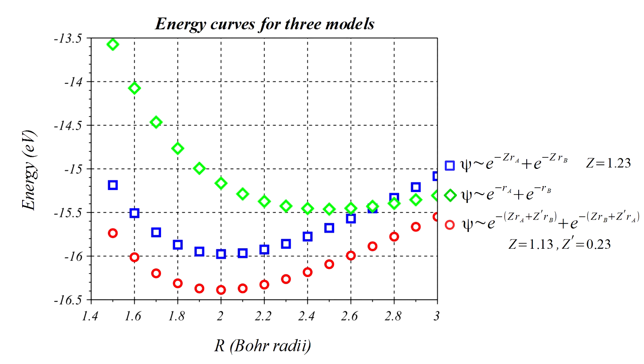Here are the energy versus r curves for the three approximate models we've discussed. The green triangles are the basic combination of 1s orbitals we explored first. The blue squares are the Finkelstein and Horowitz model, and the red circles are the Guillemin and Zener model. The last two both predict the correct value of r equals 2. The Guillemin and Zener model has an energy that's extremely close to the observed value, implying that it gives the most accurate representation of the ground state wave function.